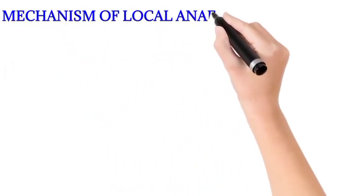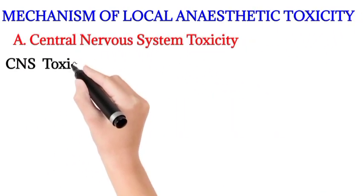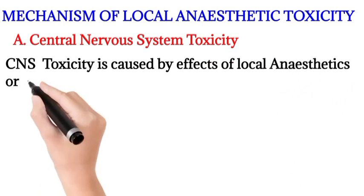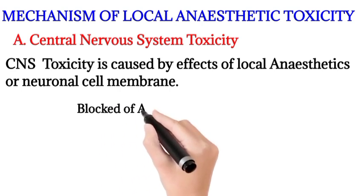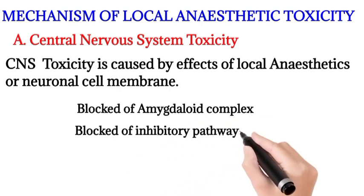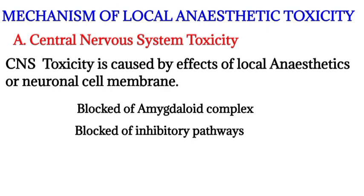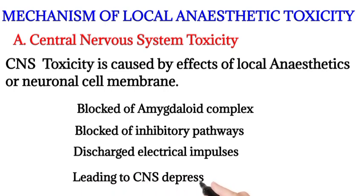Mechanism of local anesthetic toxicity — central nervous system toxicity. CNS toxicity is caused by the effect of local anesthetics on the neuronal cell membrane. Initially there is blockade of the amygdaloid complex, followed by blockade of inhibitory pathways in the cerebral cortex. This allows facilitatory neurons to discharge electrical impulses unopposed, resulting in CNS excitation and convulsions. Further increase in dose suppresses facilitatory pathways, leading to CNS depression and respiratory arrest.